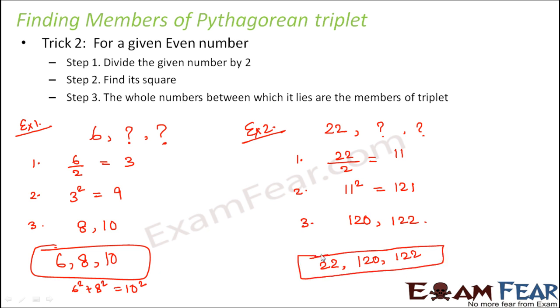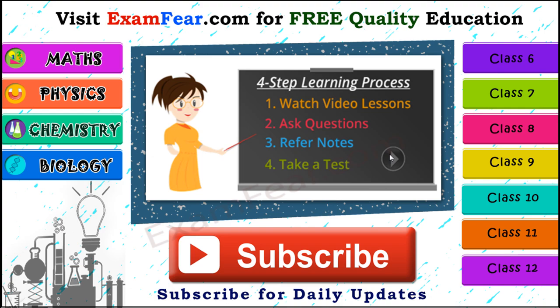So in this fashion you need to remember tricks 1 and trick 2 for odd and even numbers respectively. But please do remember that the given number in these tricks will always be the smallest member of the triplet and there exists many other triplets with the same number and all triplets cannot be covered by this trick. So this trick is helpful only when one number is given to you and you have to complete the triplet with that number. So in that case this trick will work. Thank you.